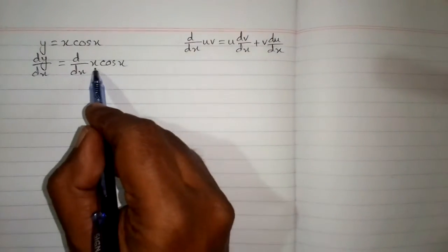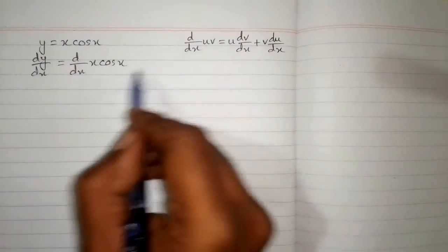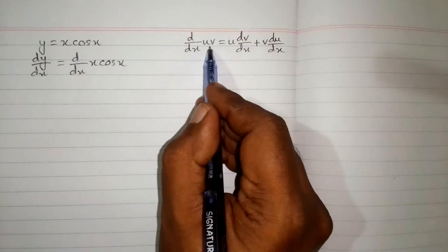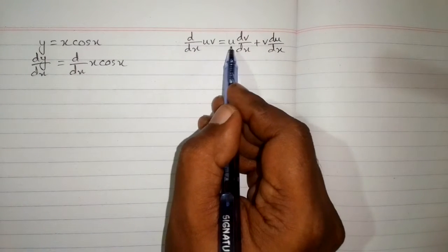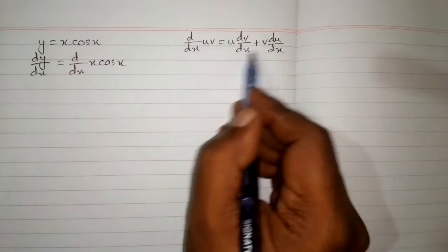So we can see that we have x in place of this u and cos x in place of v. So we put the values of u and v in this formula.